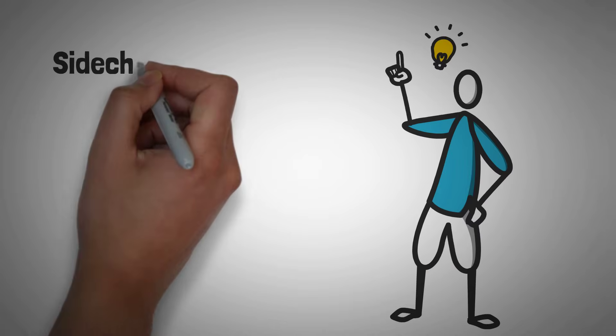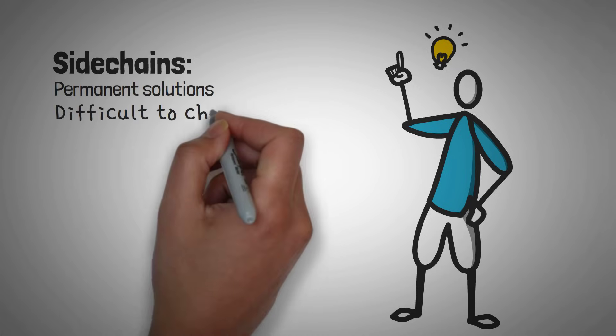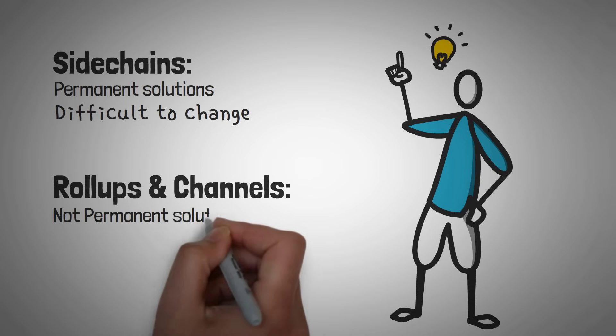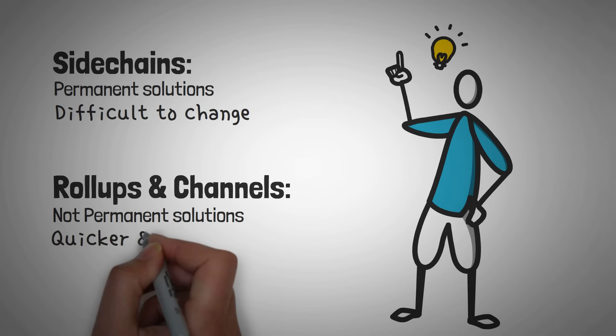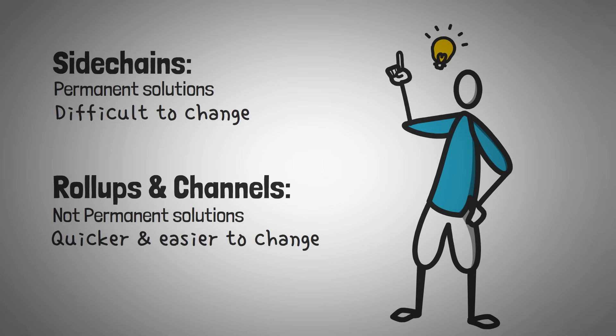One thing to keep in mind with sidechains is that they are permanent solutions that are kind of difficult to greatly change once they are in place. Rollups and channels are two other layer 2 scaling solutions that are not as permanent, but they can be changed quicker and easier. Faster iterations means faster feedback, which means faster overall development. But sidechains definitely work.